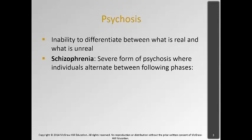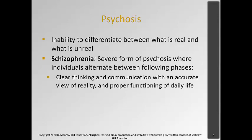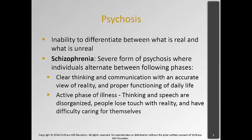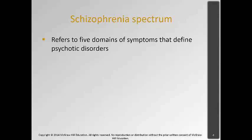Schizophrenia is a severe form of psychosis where individuals alternate between the following phases: clear thinking and communication with accurate view of reality and proper functioning of daily life, and an active phase of illness where their thinking and speech are disorganized, where they lose touch with reality and have difficulty caring for themselves. We associate schizophrenia very strongly with the active phase of the illness.